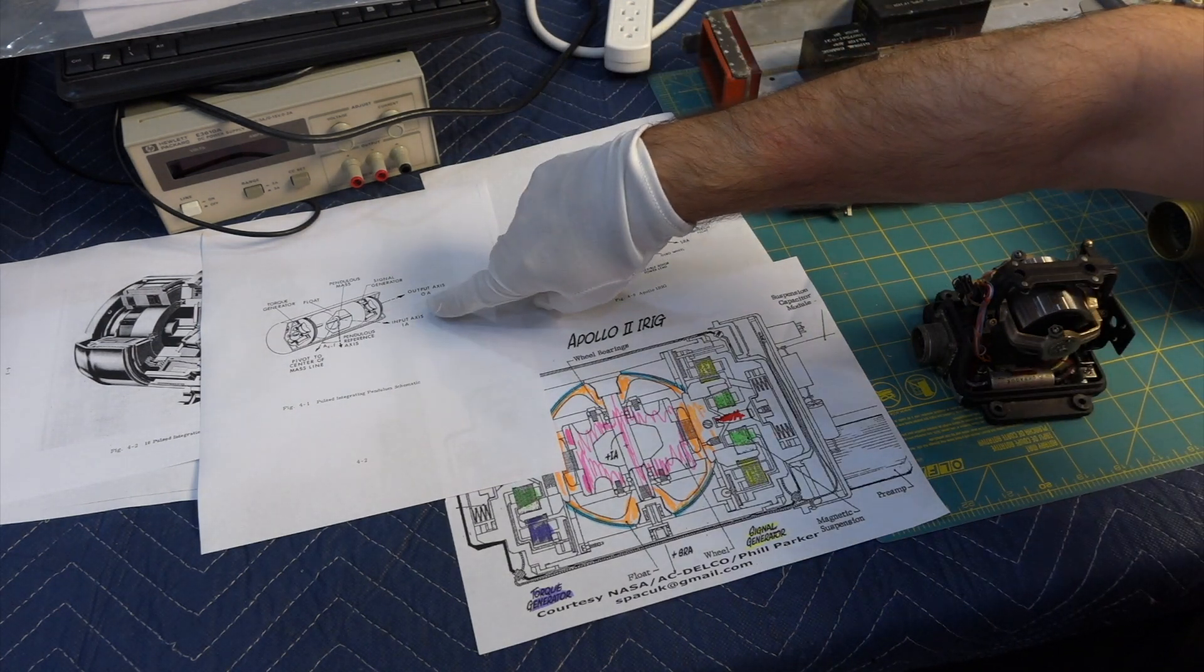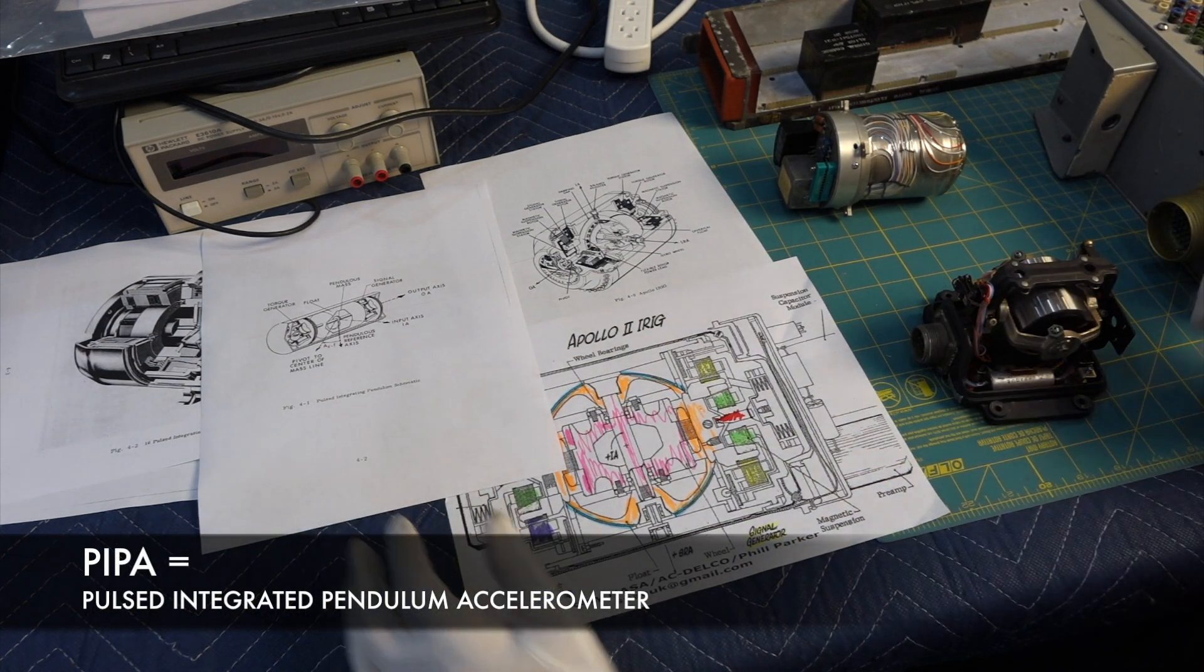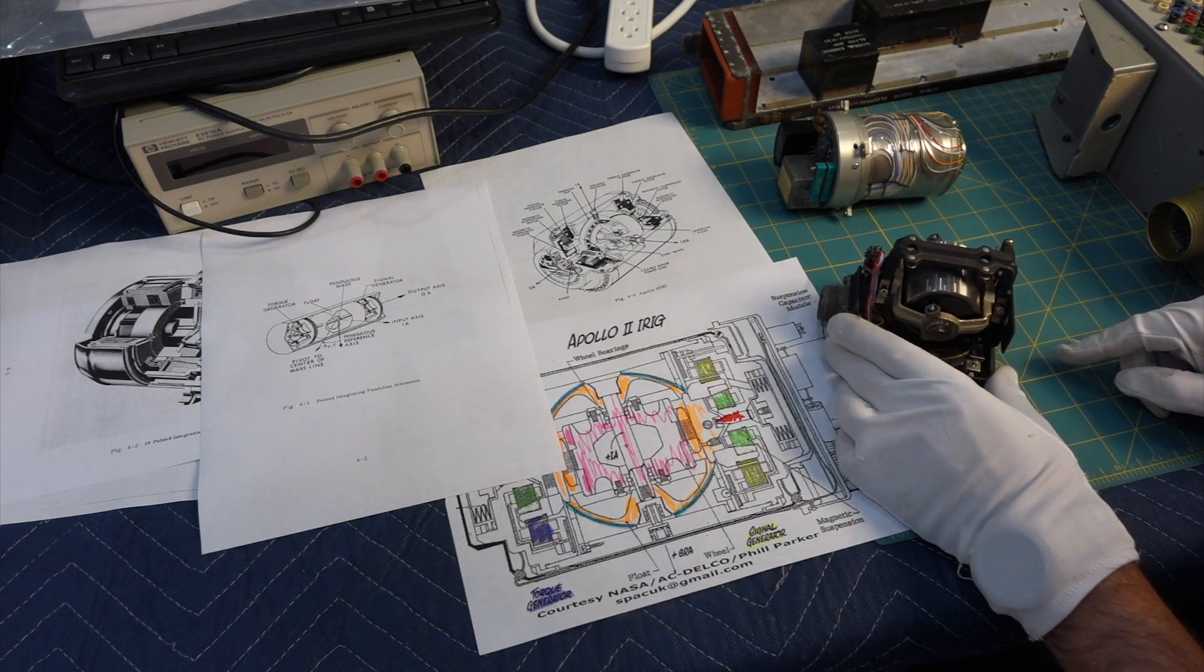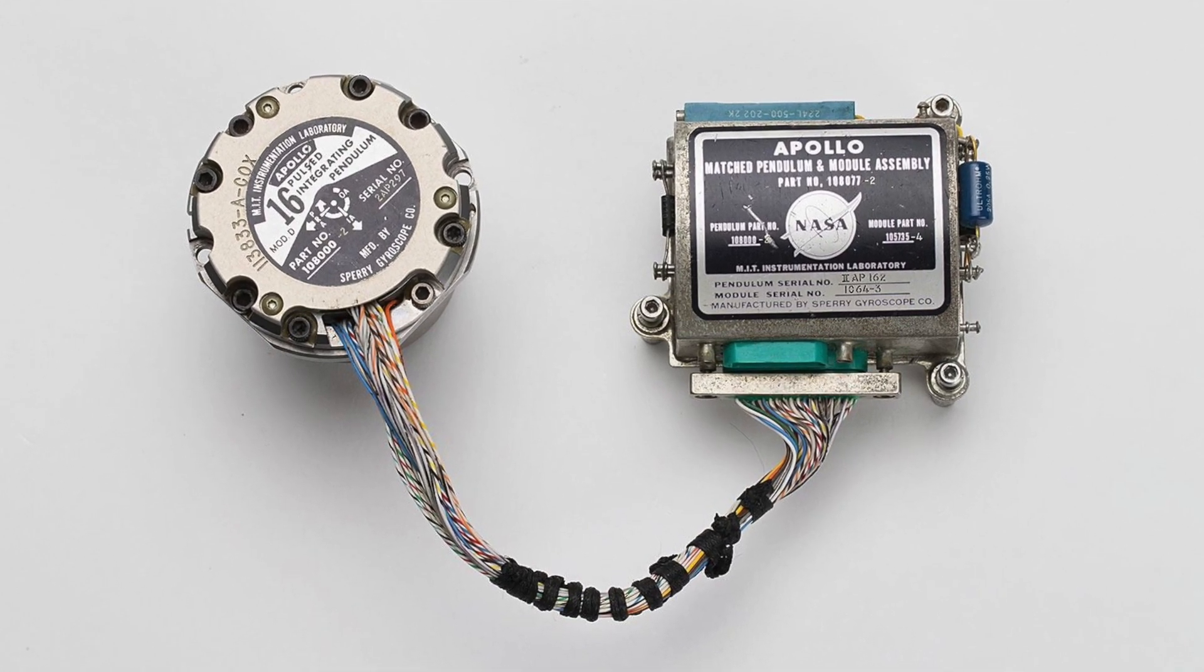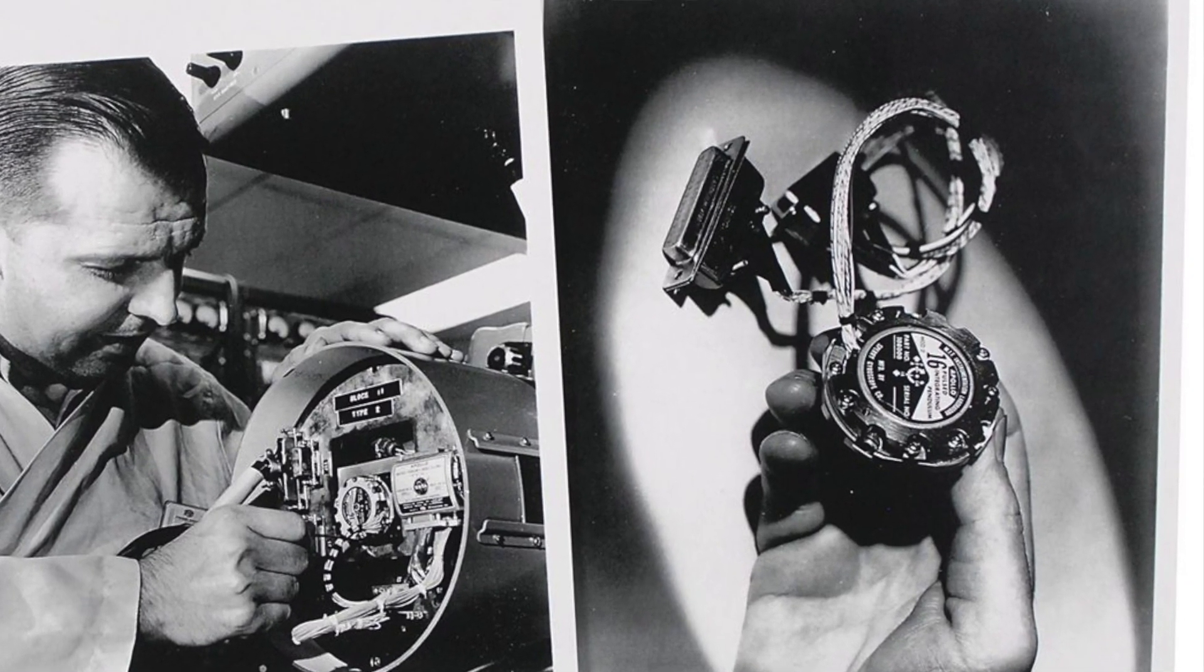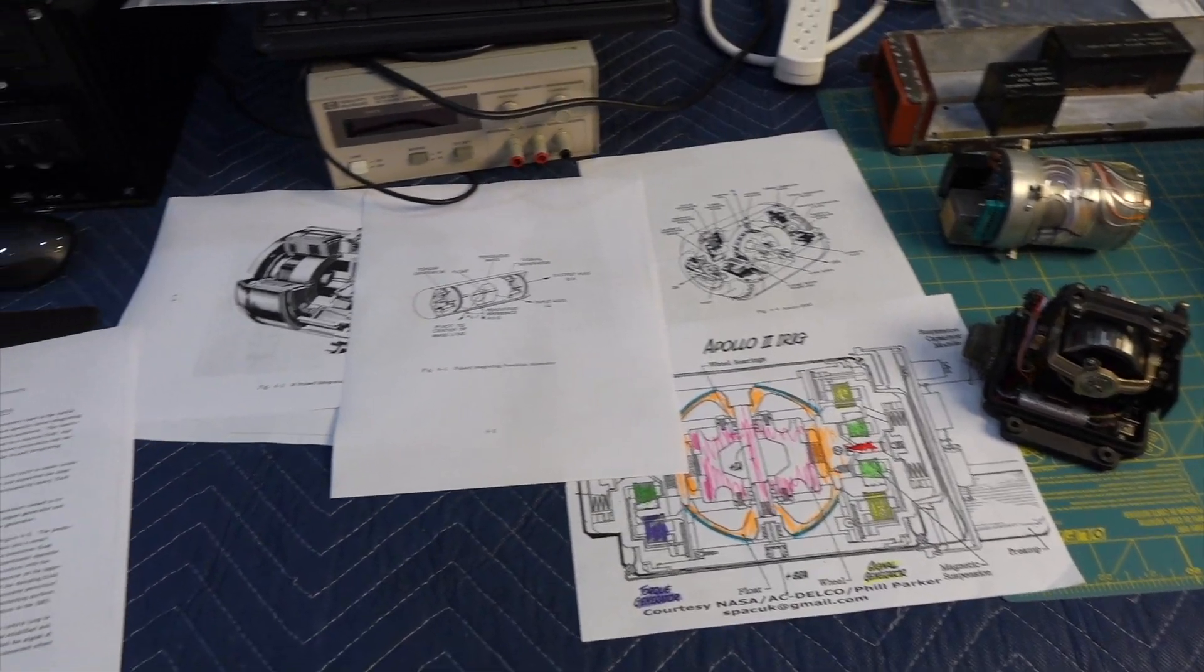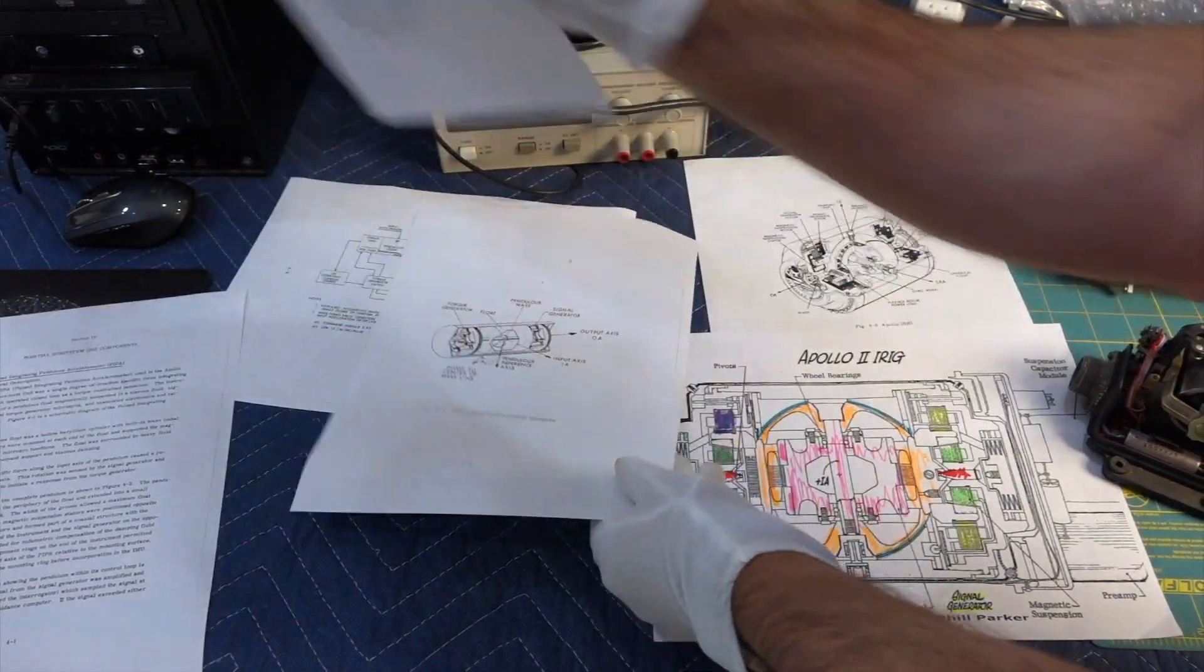And that's done by the PIPA, the Pulse Integrating Pendulum Accelerometer. And we need to replicate that before we can do a landing. So the PIPA is slightly smaller than the gyro. And as there were three gyros in the IMU, there are also three PIPAs, so three accelerometers. And it looks like this.